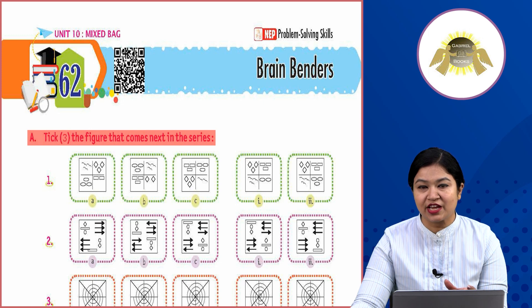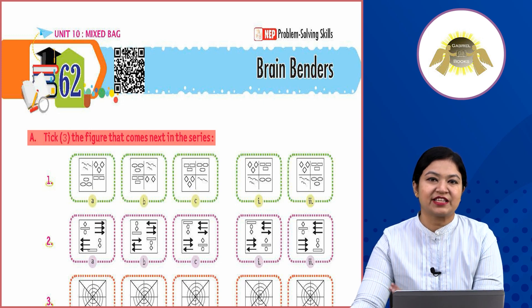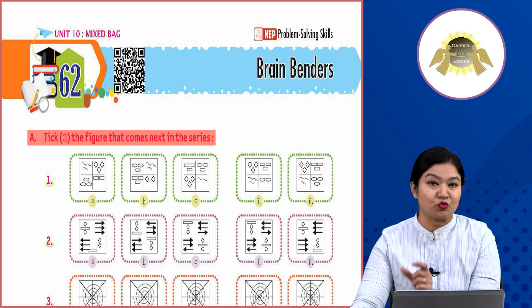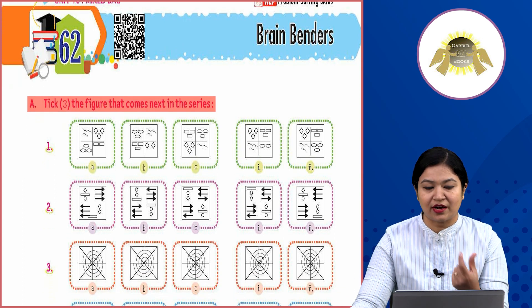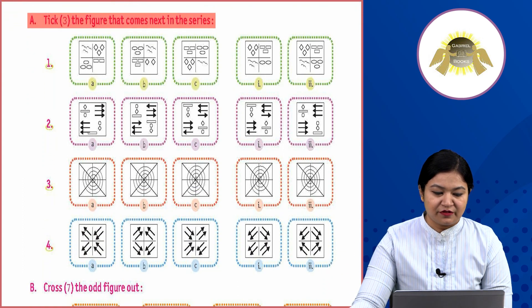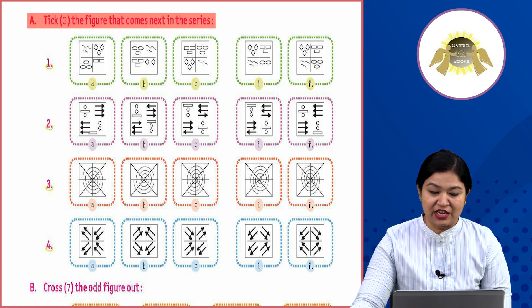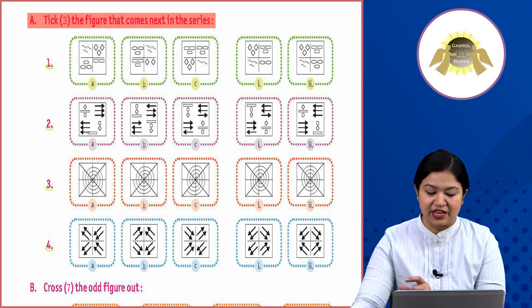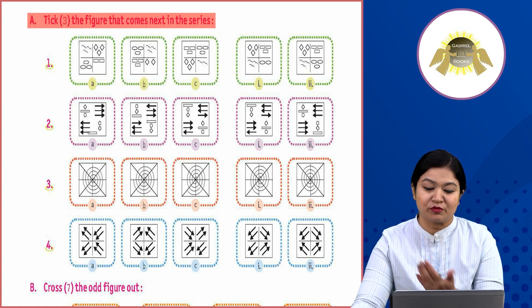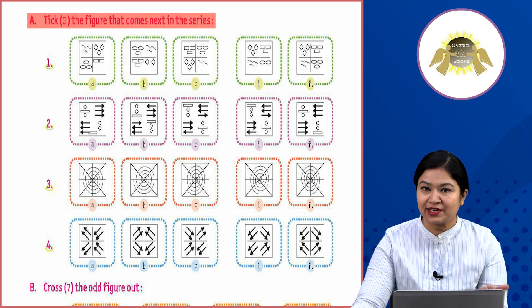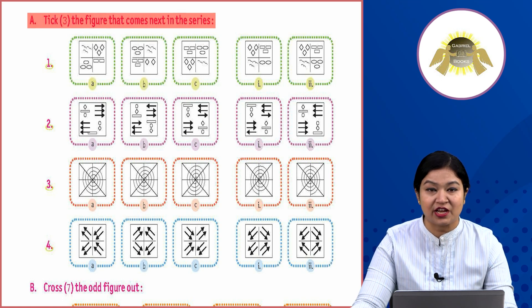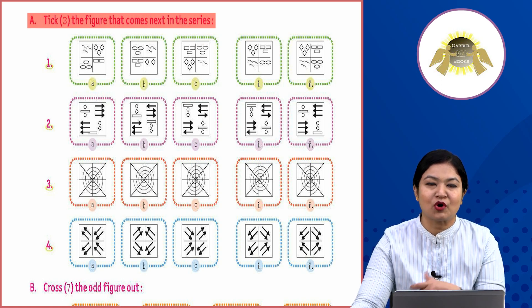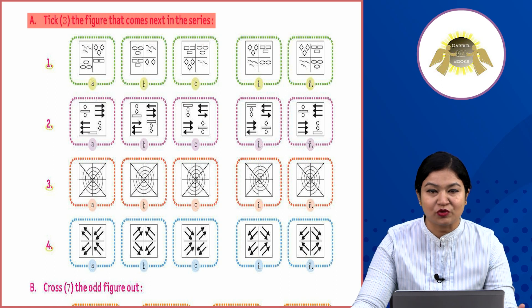Tick the figure that comes next in the series. You have four figures. The series may have option one or two. The next figure in this series — look at the boxes, the figures in each box should be a match. So the correct answer is option two, as the next figure in the series matches the box.